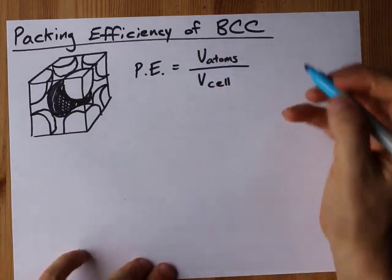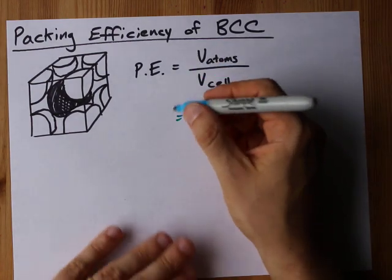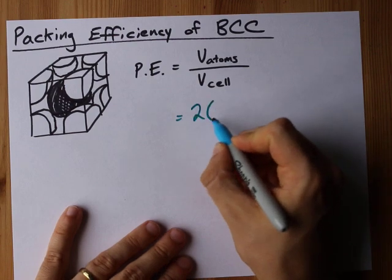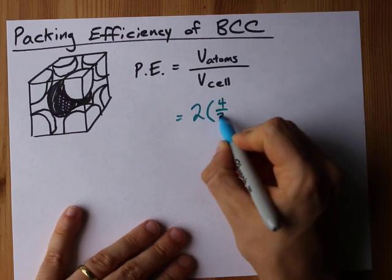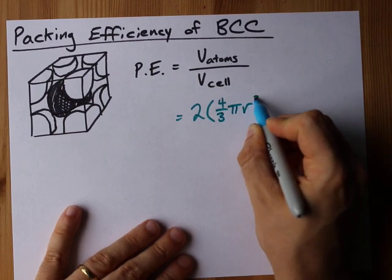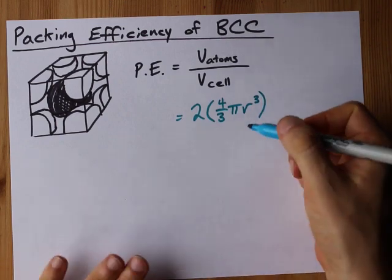So the volume of the atoms is two spheres worth which is two times the volume of a sphere, four thirds pi r cubed. It's the formula for the volume of a sphere.